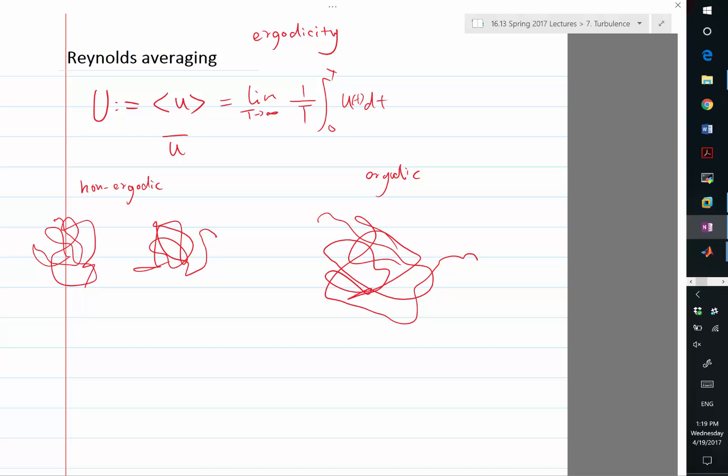Ergodicity assumes that in this huge phase space, wherever you start the simulation, you will experience, you will go through the entire phase space. There are portions of the phase space that is never accessible, but you will access all the portions of the phase space that is accessible by the Navier-Stokes equation for that particular domain and boundary condition.